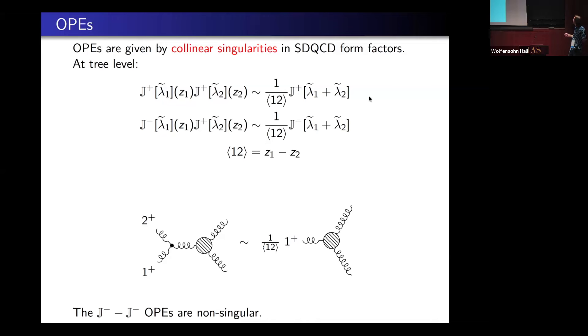Similarly, there's going to be a minus plus to minus OPE. But it's crucial that the self-dual theory is very chiral. Negative helicity and positive helicity gluons are treated very differently. So there is no minus minus OPE. This OPE is non-singular. This is crucial because the splitting function here would be the complex conjugate and we don't want to rely on that.